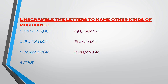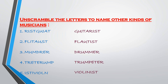Fourth: T-R-E-T-E-R-U-M-P. If you rearrange the letters, you will get T-R-U-M-P-E-T-E-R, that is trumpeter. It is a person who plays the trumpet. Fifth: I-S-T-I-V-I-O-L-N. If you rearrange the letters, you will get V-I-O-L-I-N-I-S-T, that is violinist.